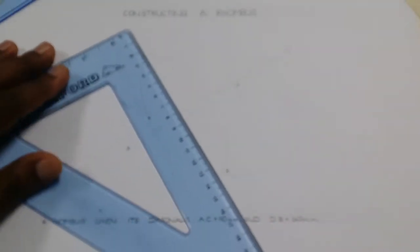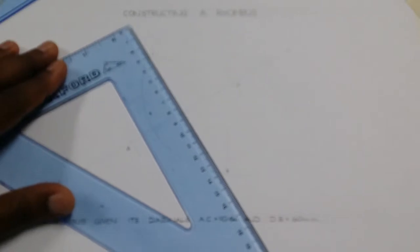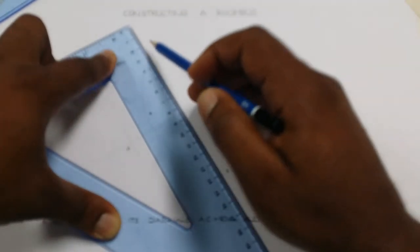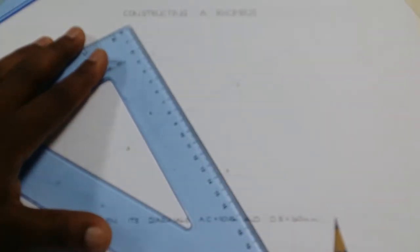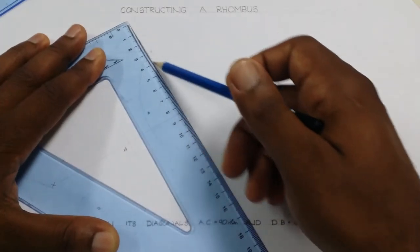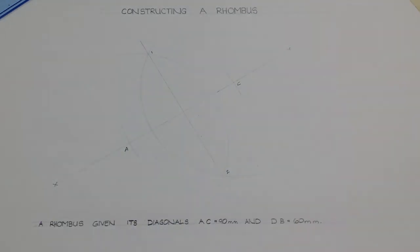Our next step: we draw our perpendicular bisector that should pass through point one and point two. Must ensure at all times that we use construction lines—light lines—of course, in the event we make an error, it would be erased quickly and cleanly, leaving our drawing sheet nice and neat.